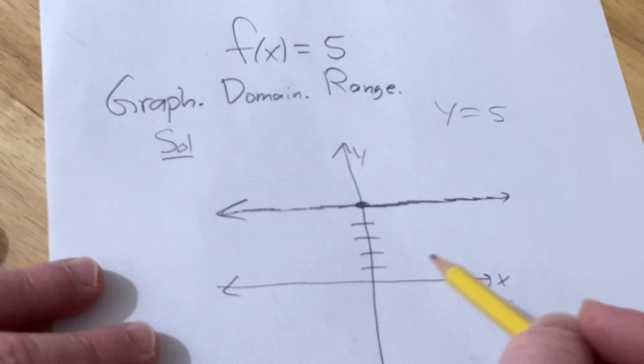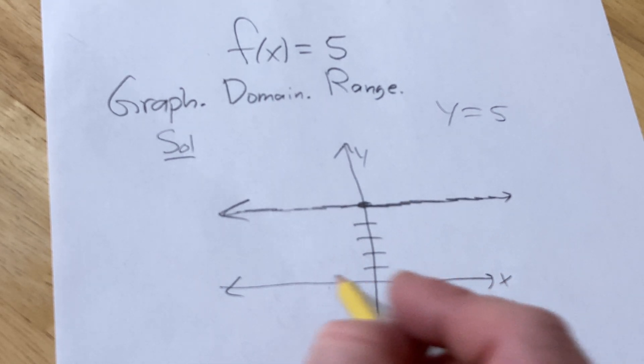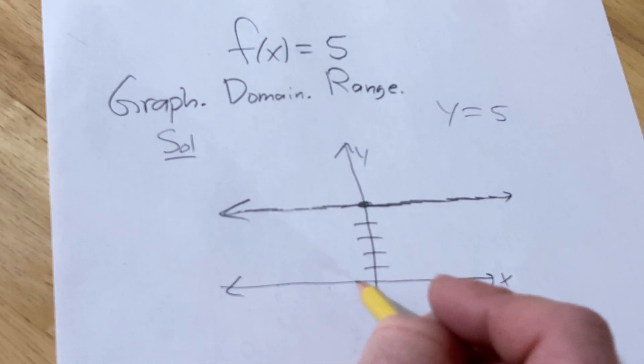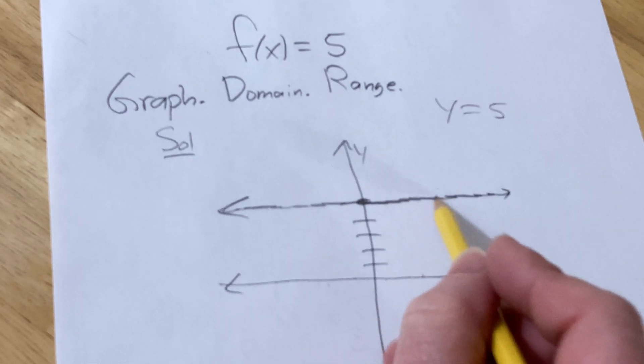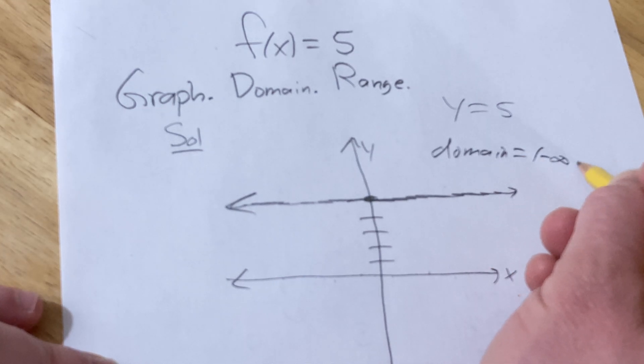Now the domain is the set of all inputs. It's all the x-values that give you y-values. So we can do it two ways. Looking at the graph, no matter what x-value I pick, I'm always going to get a y-value. So the domain is all real numbers.